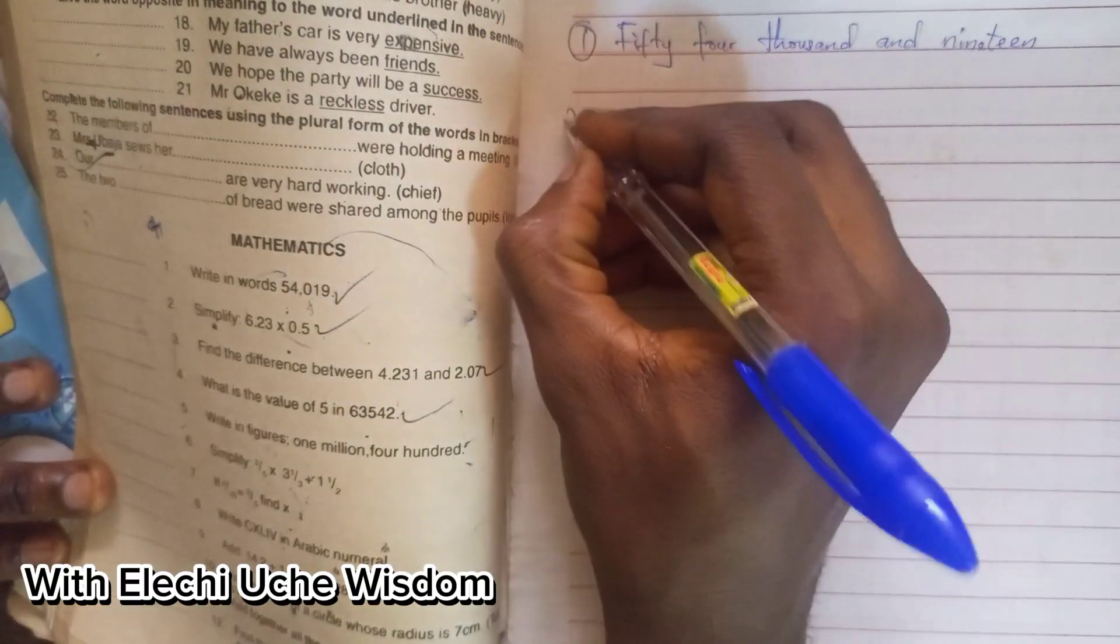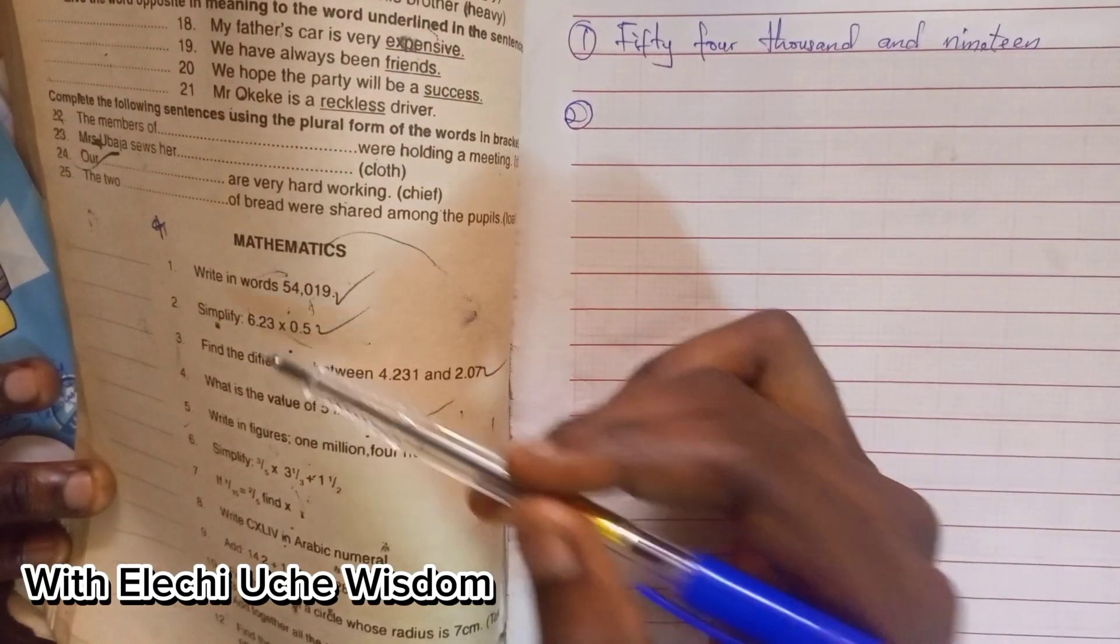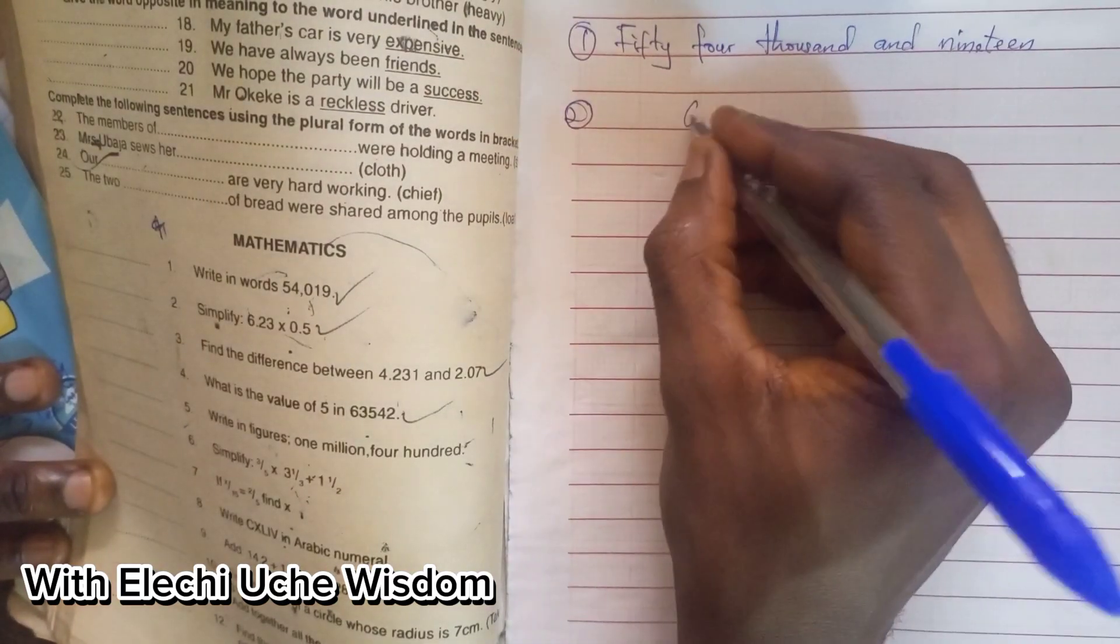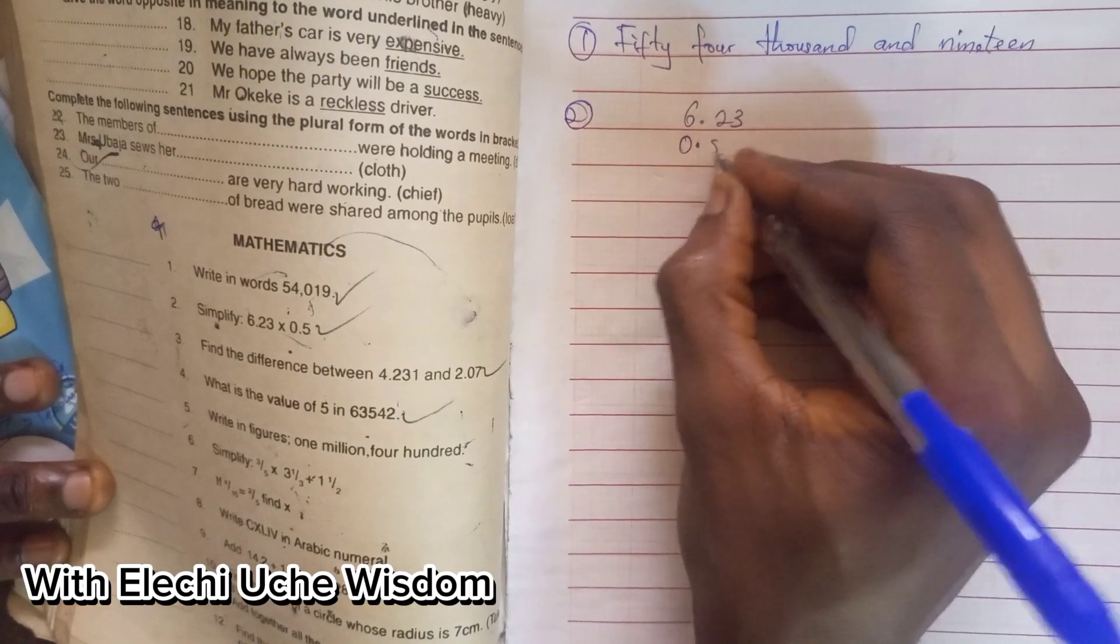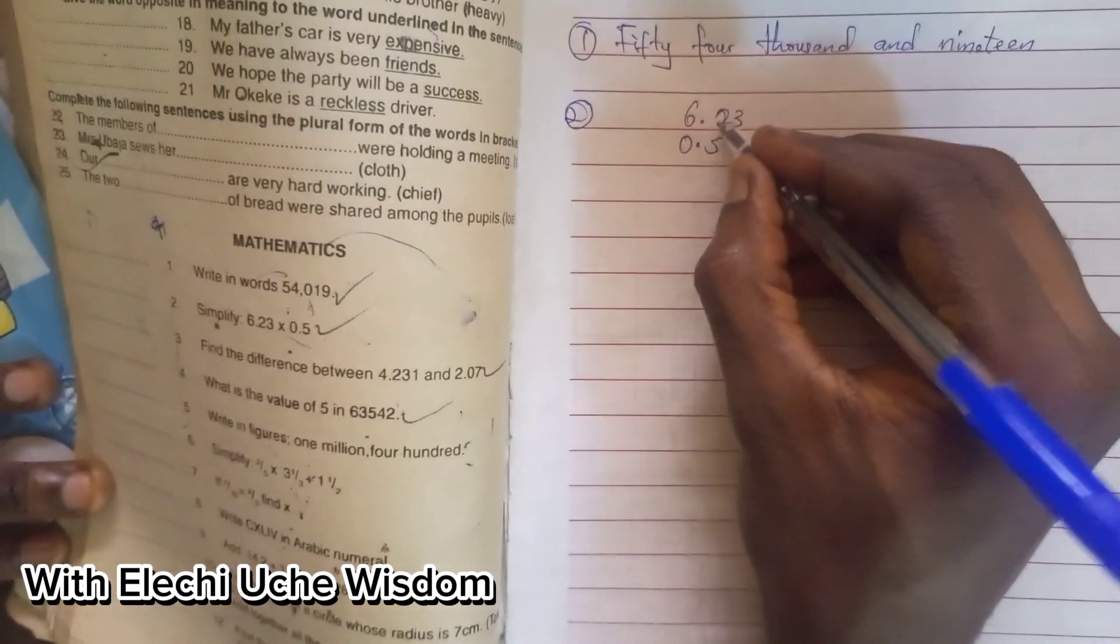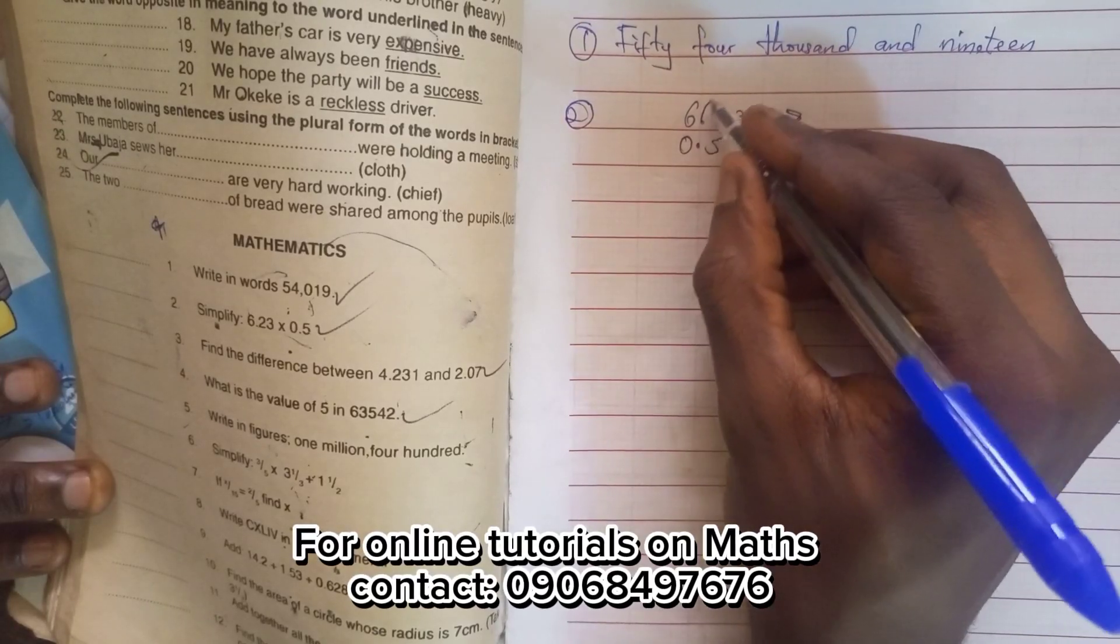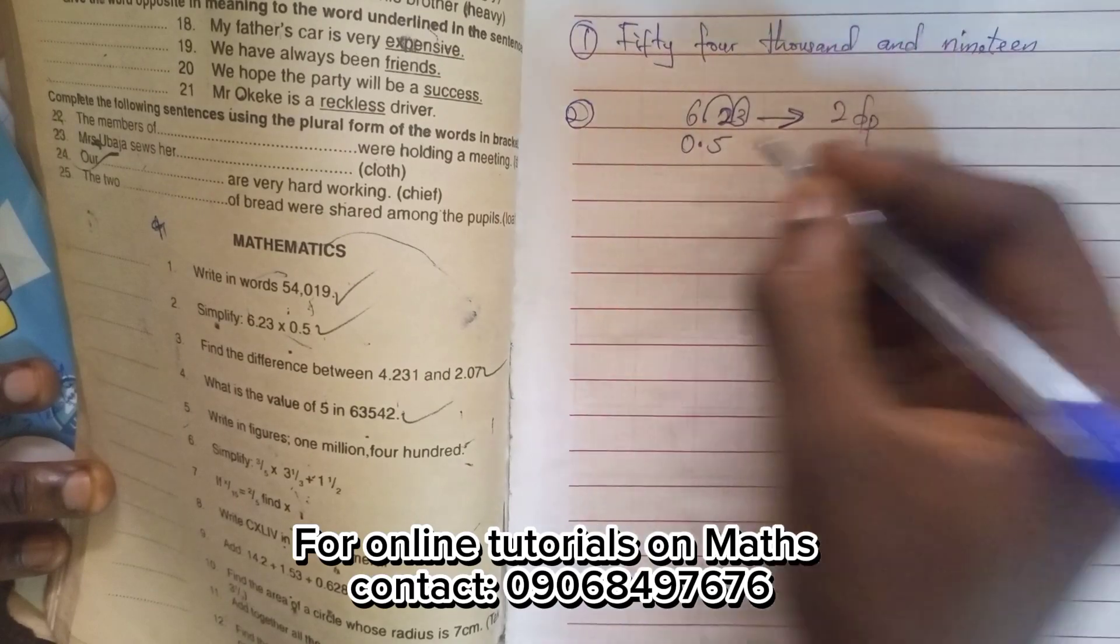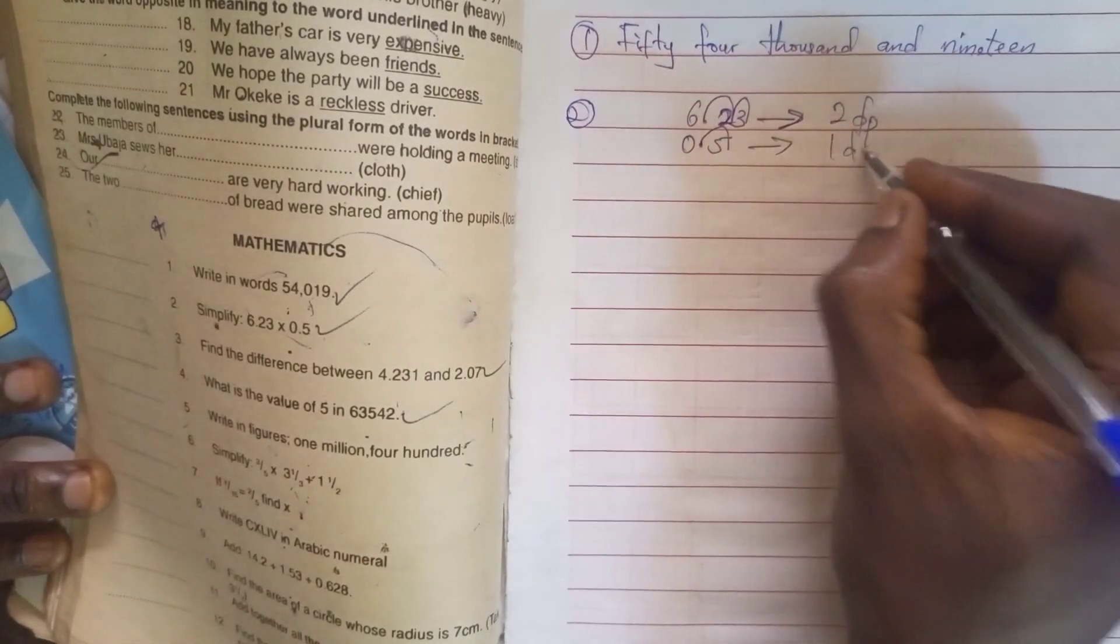Now, the second question is simplify 6.23 times 0.5. So you write 6.23 first and write 0.5. Now in this 6.23, we have to move the decimal point. We move it this way, we write two decimal places. This one, we move it this way, write one decimal place.